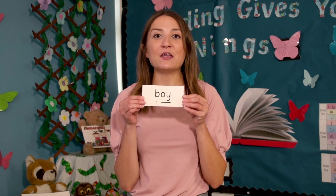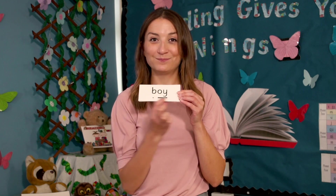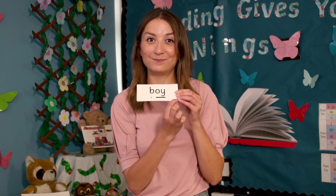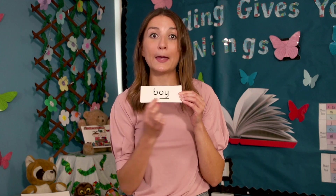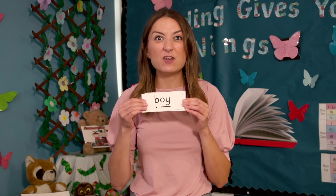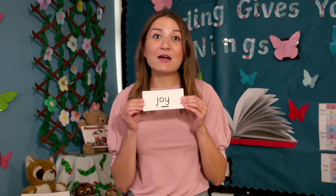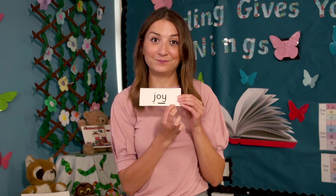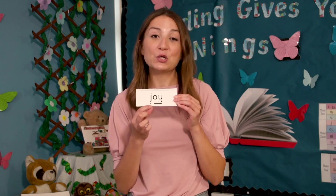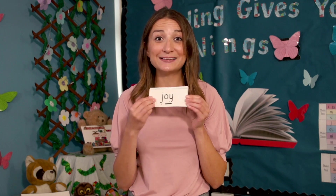Now let's read some words with our new grapheme for the sound oi. Sound-talk each grapheme and then blend to read the word aloud. Let's read the word together. B, oi — boy. Did you get it right? Read each grapheme and then blend to read the word aloud. Let's read the word together. J, oy — joy. Did you get it right?